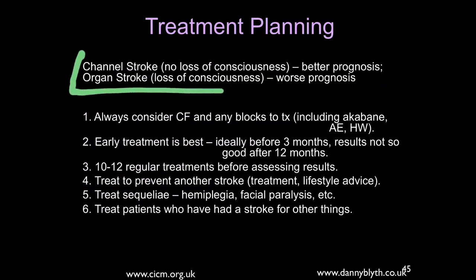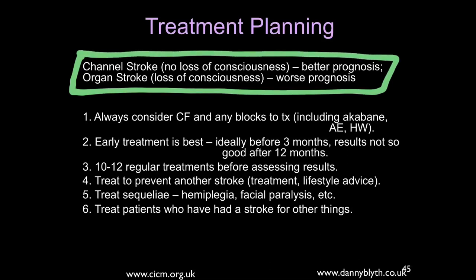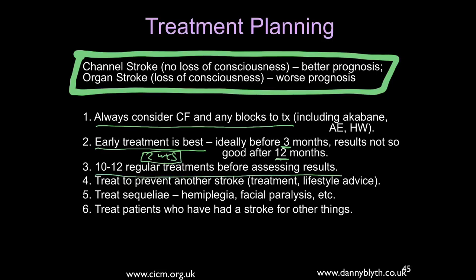To round up: channel stroke has a better prognosis; organ stroke with unconsciousness is more difficult to treat. Always consider the causative factor for the deepest level of treatment and any blocks to treatment. You can treat as early as two weeks after the stroke itself; daily treatment before three months gives the best results. After 12 months it's harder, but still worth treating. Think about 10 to 12 regular treatments before you see a difference — sometimes you see quick results especially working on muscle channels, but plan for 10 to 12 treatments and then review.